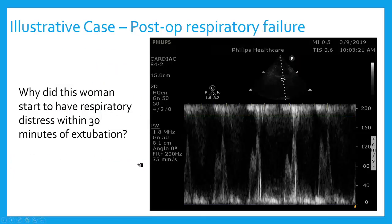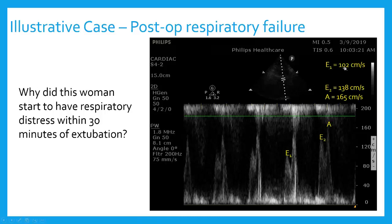We're going to go through some cases now using simple diastolic parameters and how we can use this information to help manage patients. Here's a patient that had post-op respiratory failure — she was in her 70s. A nurse practitioner extubated this patient, and she started to go into respiratory distress about 30 minutes after extubation. I had some diagnostic hypotheses, but when I threw the probe on her I had a pretty good understanding right away. We have an E-velocity of up to 138 and an A-velocity of 165 — these velocities are absolutely through the roof.